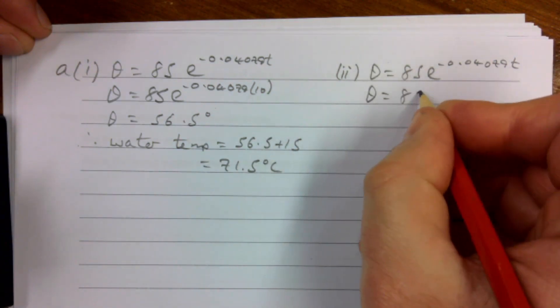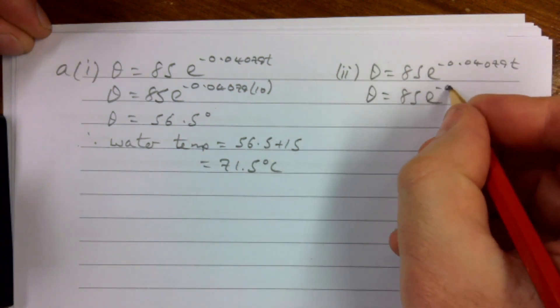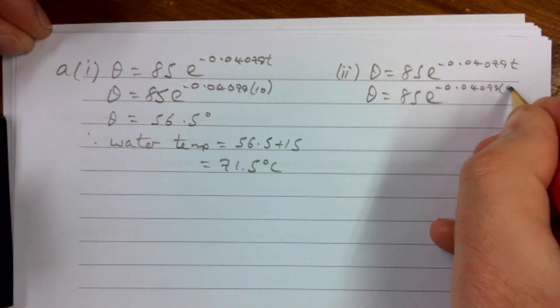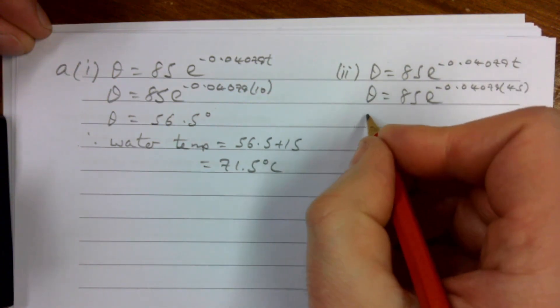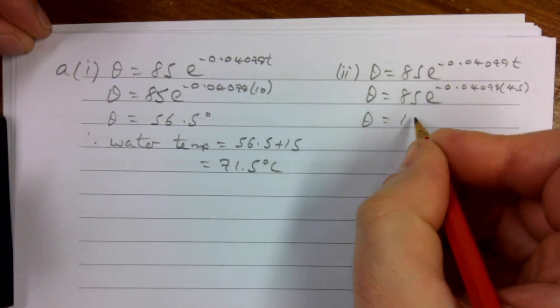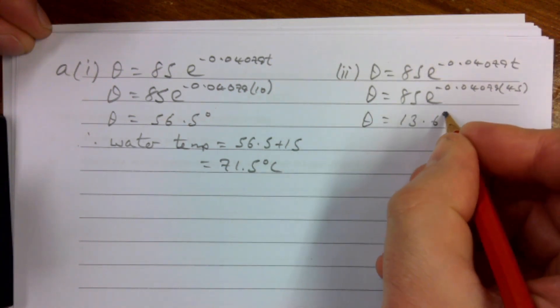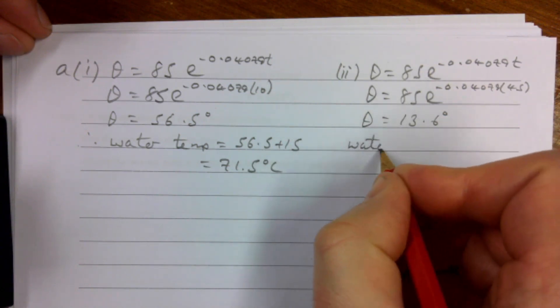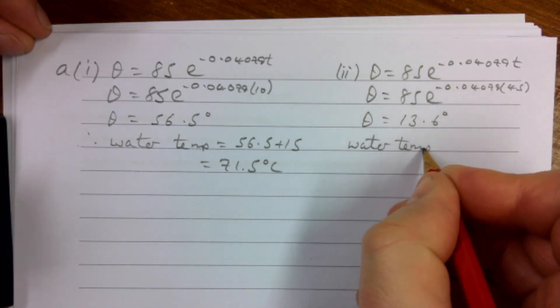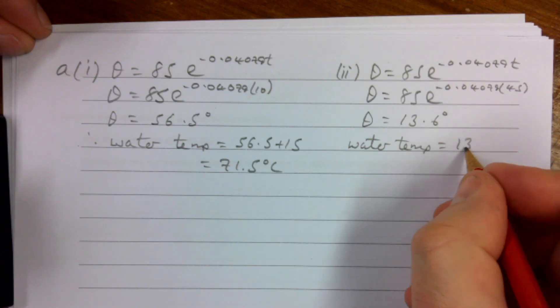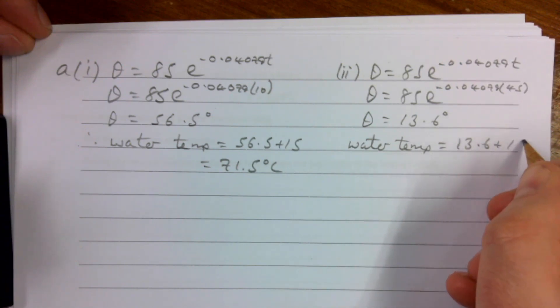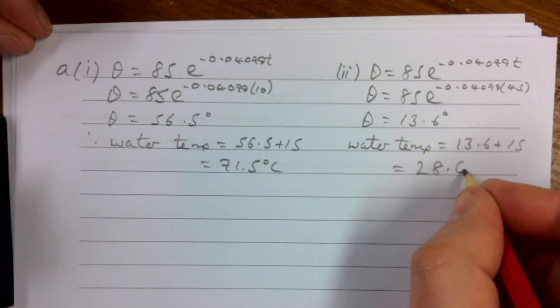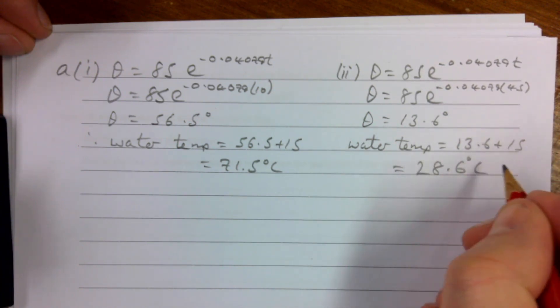θ = 85e^(-0.040790·45). This time they want it for 45. And then θ is 13.6 degrees. Water temperature is equal to 13.6 + 15, and that is 28.6°C.